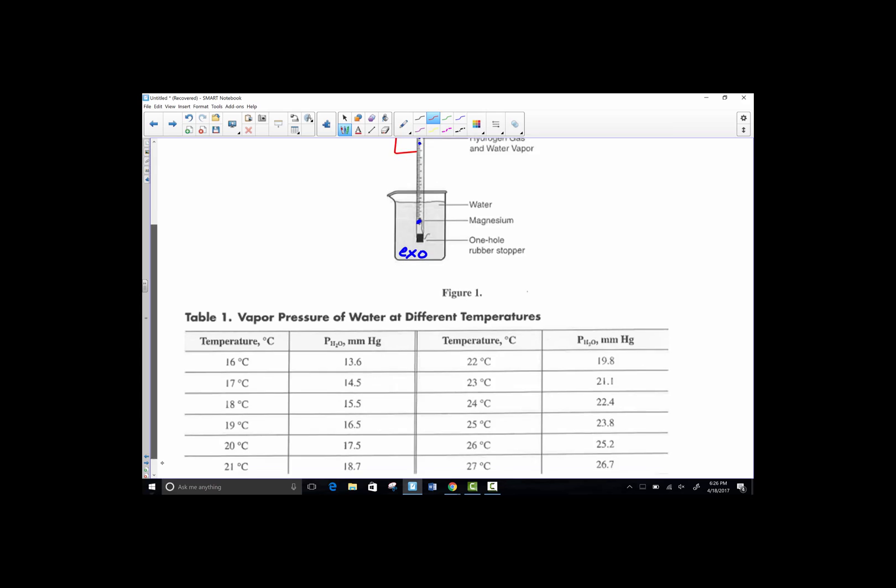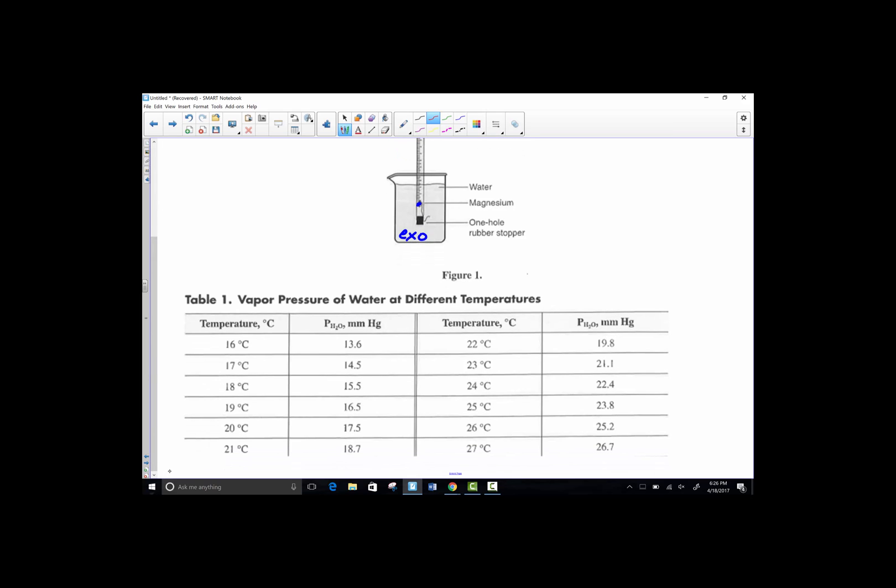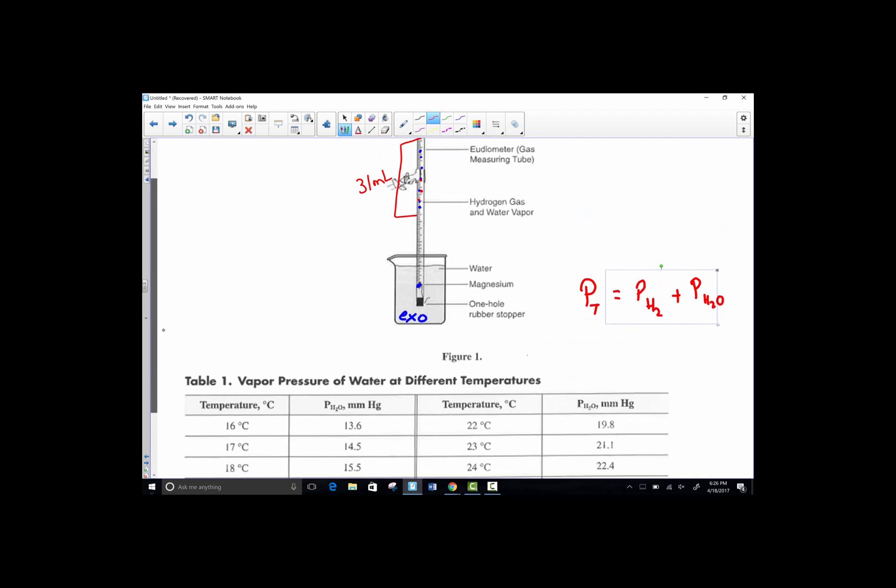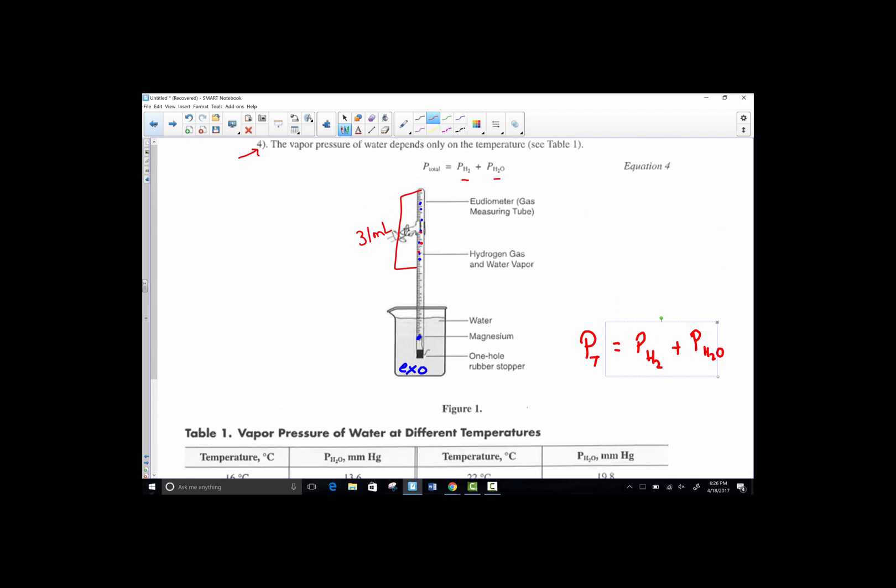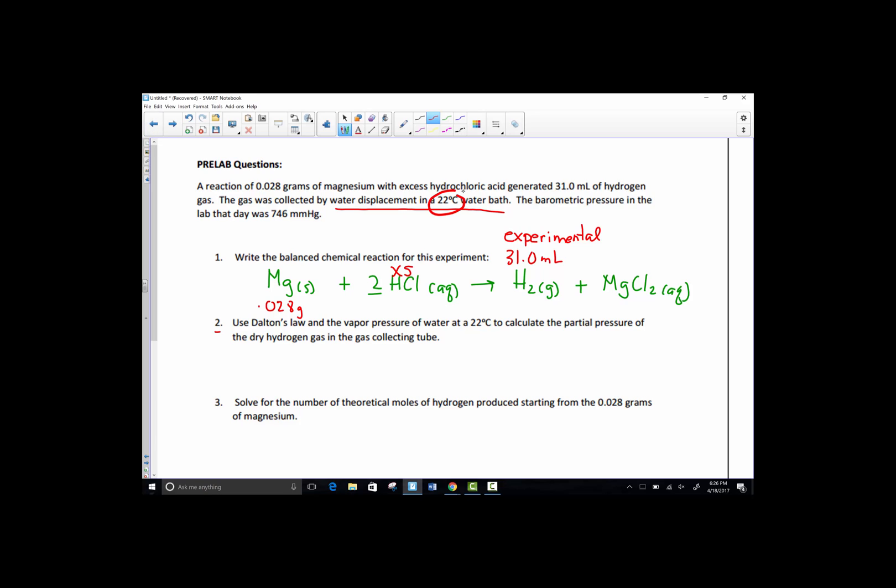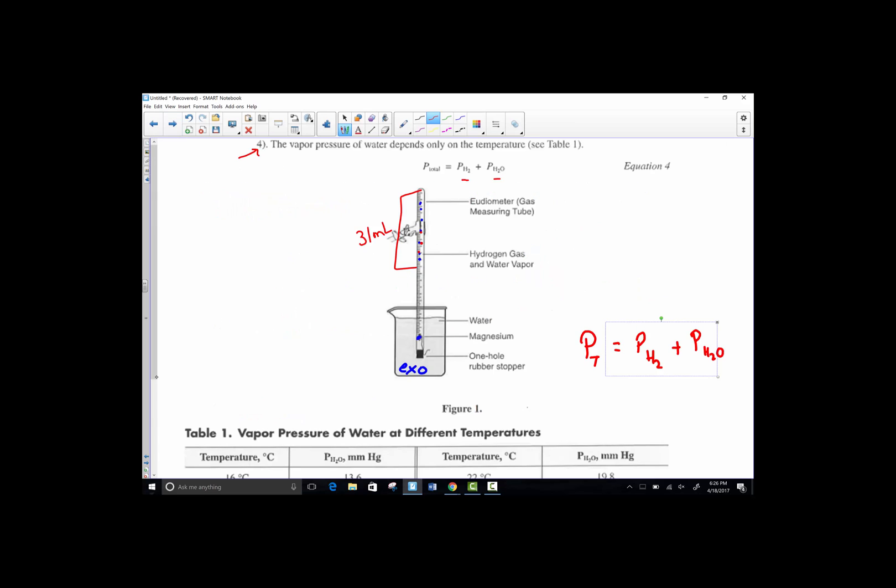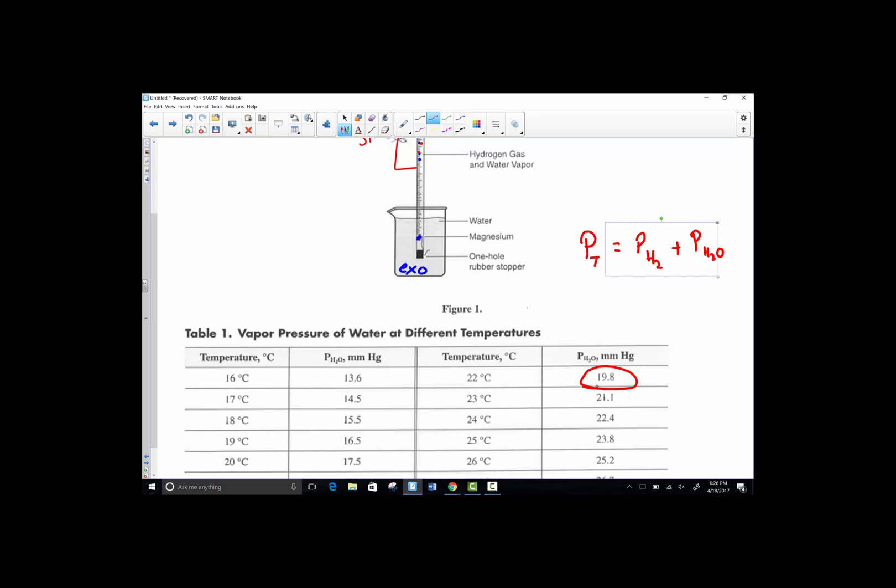What we do is simply use this chart to find the value of the partial pressure of water so we can subtract that from the barometric pressure. The total pressure, this is the Dalton's Law of Partial Pressure we're learning about in lecture, the total pressure of our system comes from two contributions, the hydrogen regenerated and the partial pressure of water inside the tube simply by bubbling the hydrogen through the water. We read this chart to find the contribution of water to the total pressure. Do you remember reading just a moment ago that the water was at 22 degrees Celsius? At 22 degrees Celsius we read this chart and see the partial pressure of water at 19.8 millimeters of mercury, 19.8.